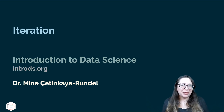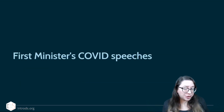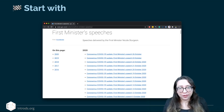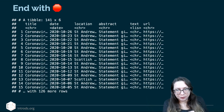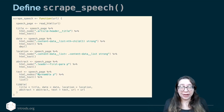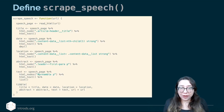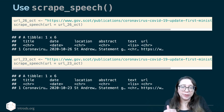We're going to wrap up our web scraping story with iteration. So what have we done so far? We were looking at First Minister's COVID speeches and we started with this page, and our ultimate goal is to get to this table. We have created a function called scrape_speech and we have used this function to scrape data from various URLs — the URL for each of the speeches.